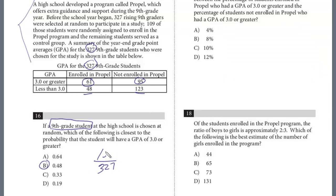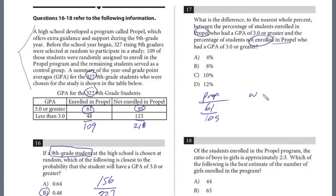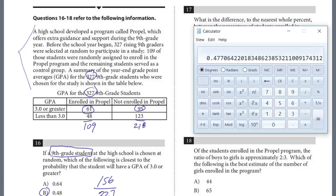Let's take a look at question 17. What is the difference, to the nearest whole percent, between the percentage of students enrolled in PROPEL who had a GPA of 3.0 or greater and the percentage of students not enrolled in PROPEL who had a GPA of 3.0 or greater? This is different from question 16 because we're only looking at students in the respective programs. So let's get the total of the students in each program. PROPEL is 109, and for not PROPEL, 123 plus 95 gives us 218. We want to see the difference in the percentage of students in PROPEL who had a 3.0 versus not PROPEL. PROPEL 3.0 is going to be 61 over 109, and not PROPEL is going to be 95 over 218.